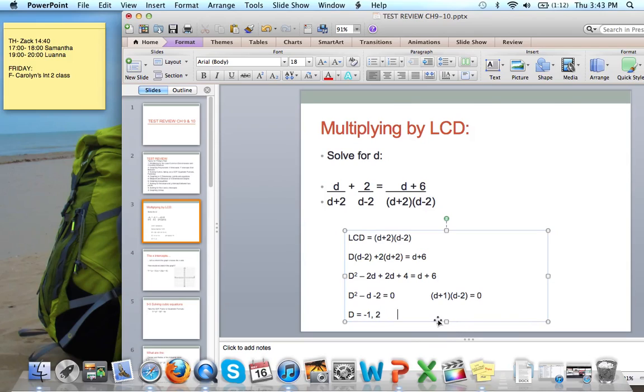Last thing we have to do is check. And if we check, when we put these in, if we put 2 in right here, we get 2 minus 2. That's 0. Thus, because we get a fraction with a denominator of 0, 2 is not a solution. And the only solution we have is d equals negative 1.